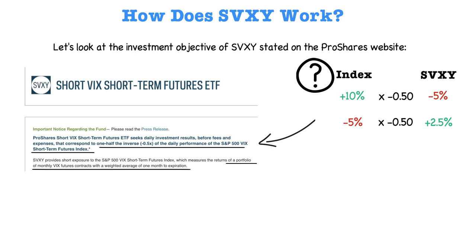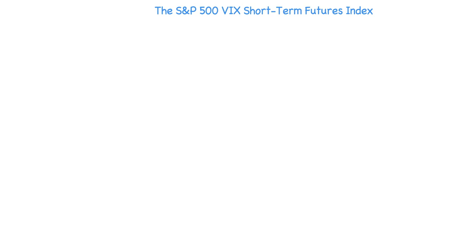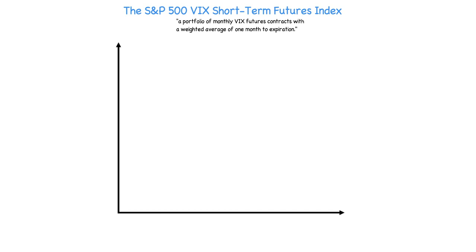The VIX Short-Term Futures Index is a portfolio of monthly VIX Futures contracts with a weighted average of one month to expiration. Let's look at an example to really illustrate what this S&P 500 VIX Short-Term Futures Index is actually doing. As mentioned, it is a portfolio of monthly VIX Futures contracts with a weighted average of one month to expiration.